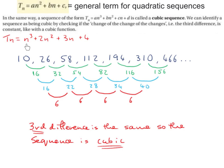Tn equals n cubed plus 2n squared plus 3n plus 4. If I was to sub in 1 in place of each of those n's, I'd get 1 cubed plus 2 times 1 squared plus 3 times 1 plus 4, which would give me 10. If I was to sub in 2, I'd get 2 cubed plus 2 times 2 squared plus 3 times 2 plus 4, which would give me 26.